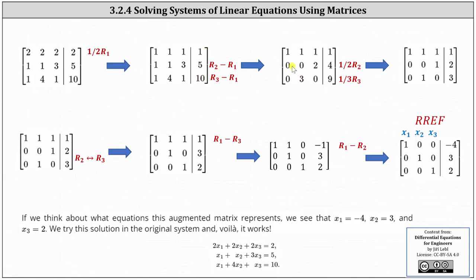Now let's get leading entries of one in row two and row three. Let's replace row two with one-half times row two, and replace row three with one-third times row three. Row one remains the same. Row two becomes 0, 0, 1, 2. Row three becomes 0, 1, 0, 3. For the next step, we will interchange row two and row three, as shown here.